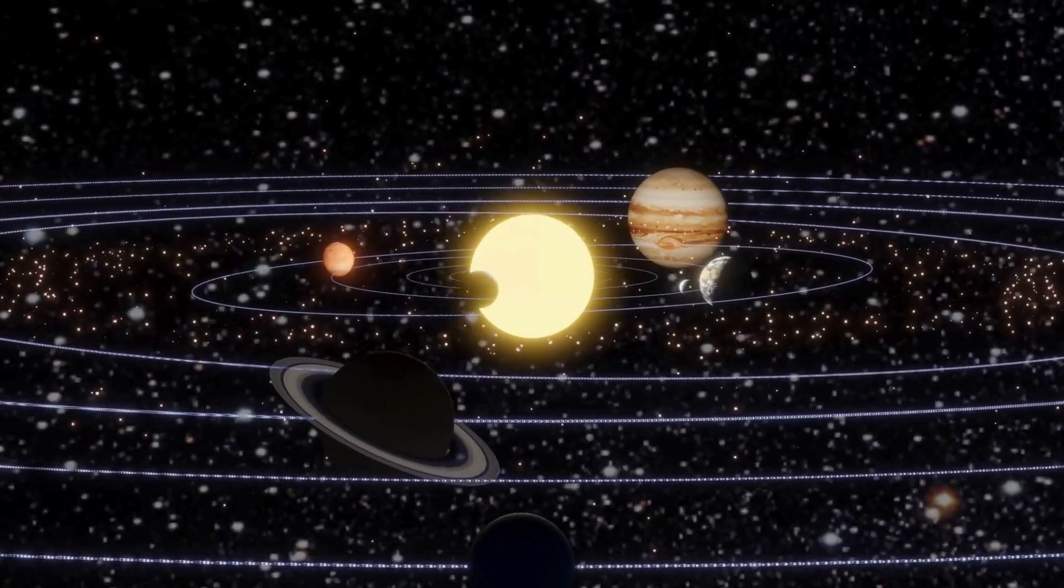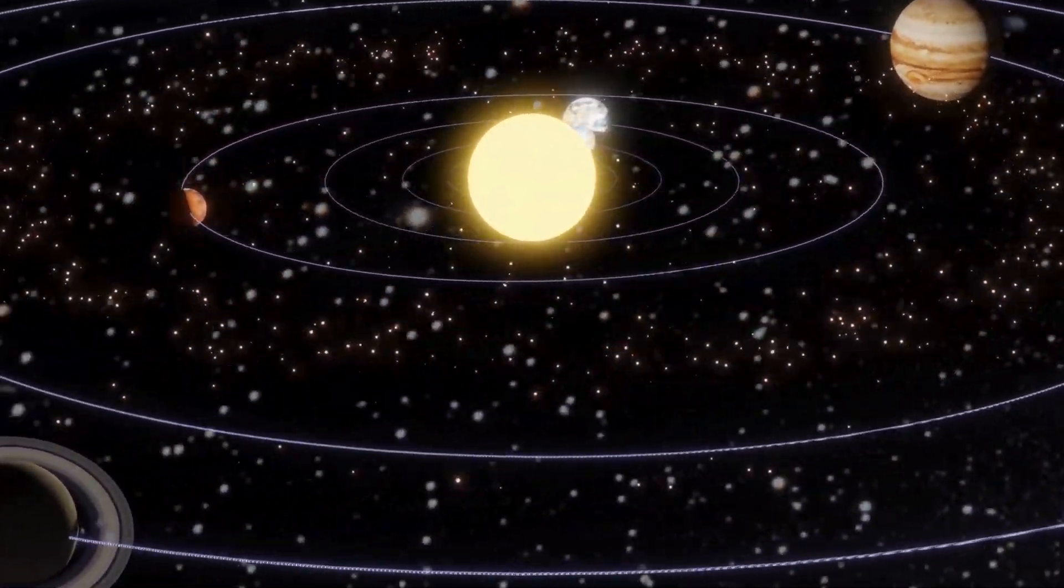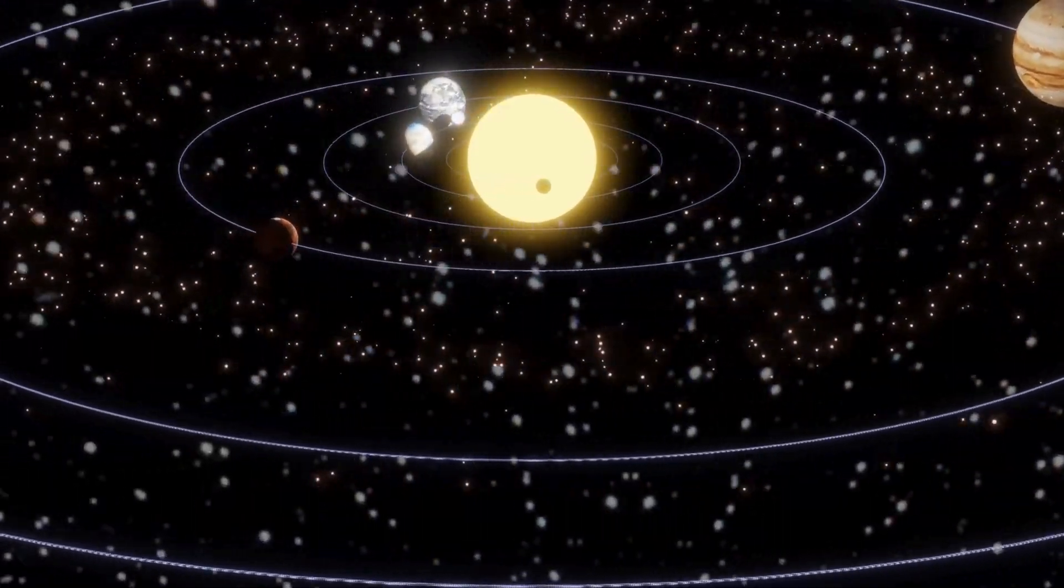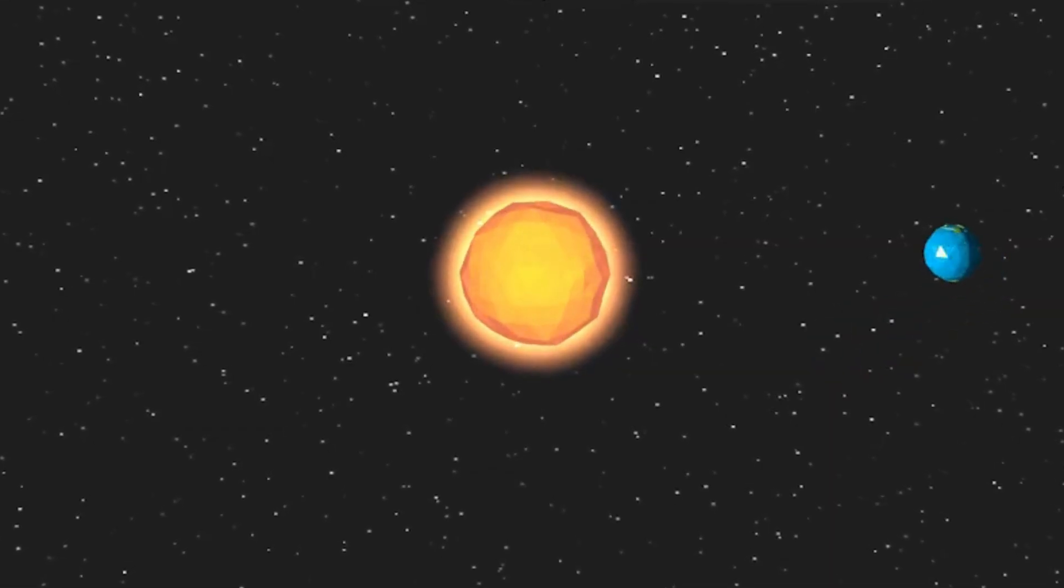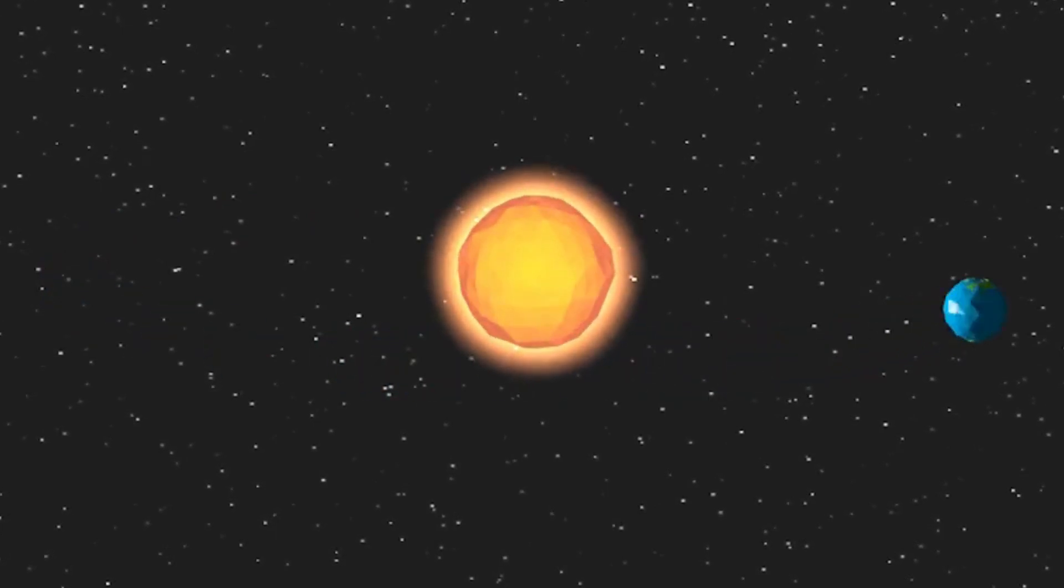Planets' rotation rates can be gradually slowed by gravitational interactions with their stars until they precisely match their orbital period. Earth isn't likely to ever get tidally locked to the Sun, we're too far away for that to happen.